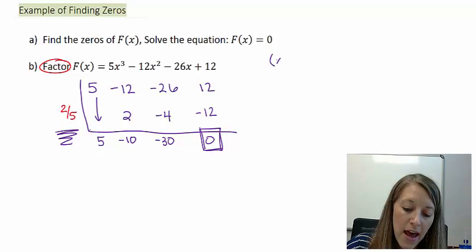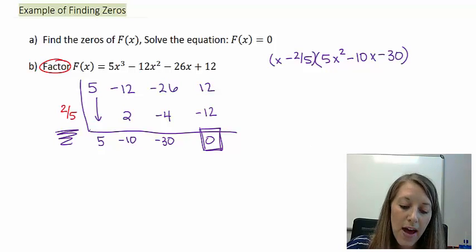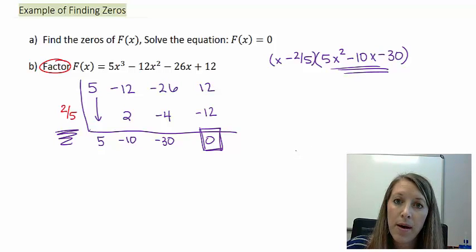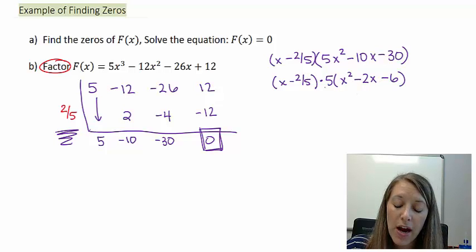I know that I have x minus my zero of 2/5, and then that's multiplied by whatever I have left here. So that gives me 5x² minus 10x minus 30. Now I need to factor this piece back here and that's going to give me my remaining zeros. If you notice it has a common factor of 5, so let me take out the 5. This is times 5 times x² minus 2x minus 6.